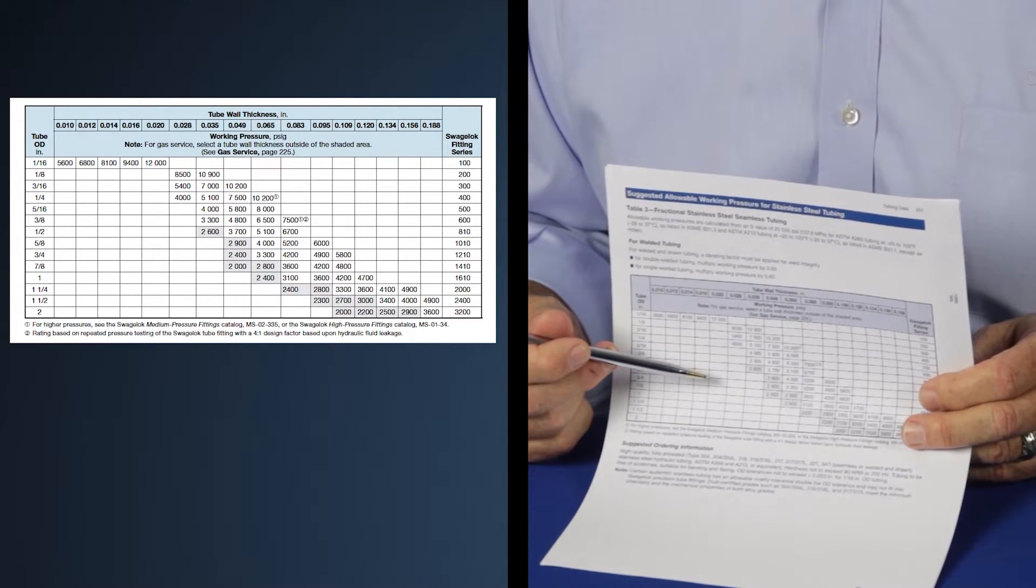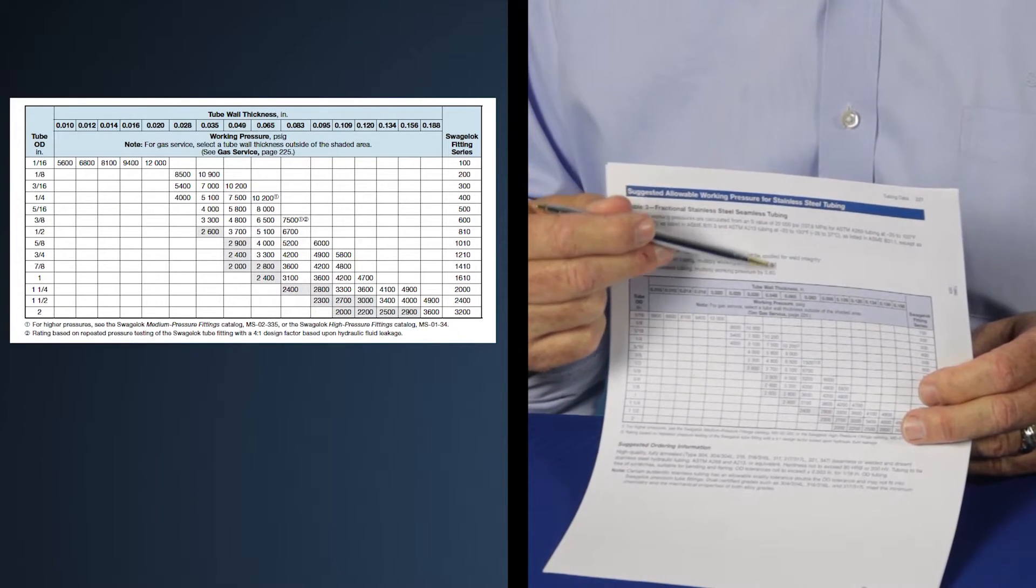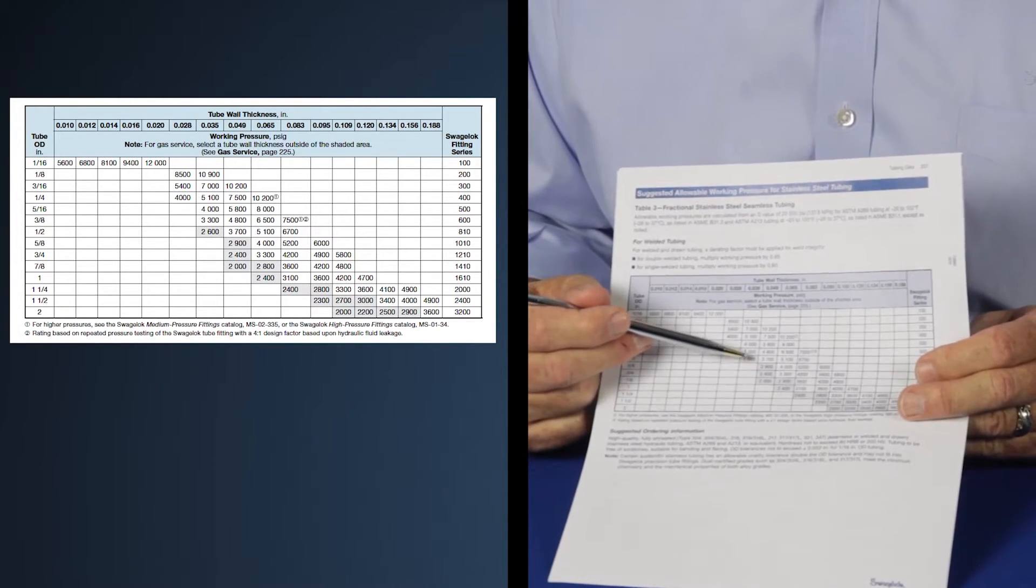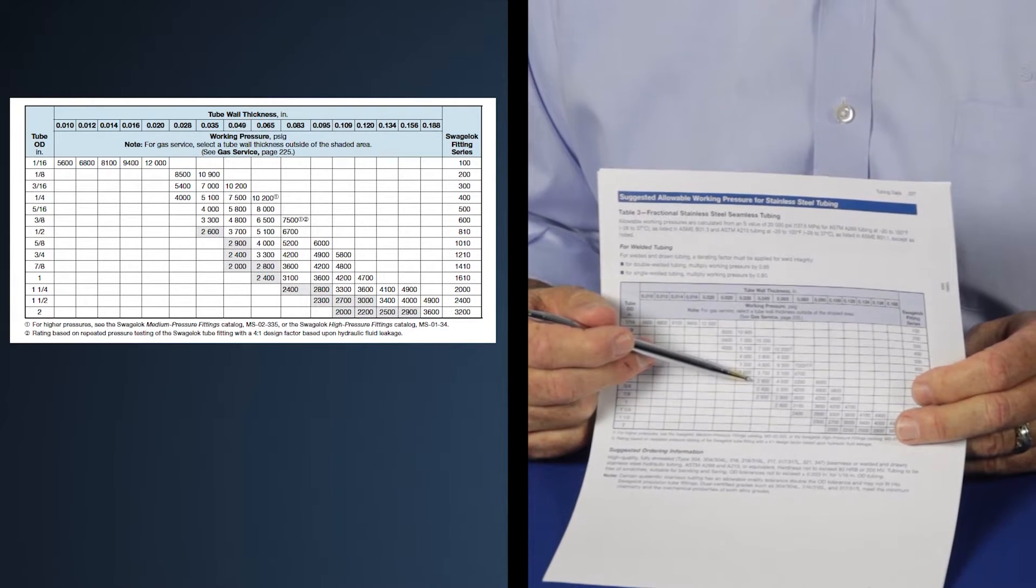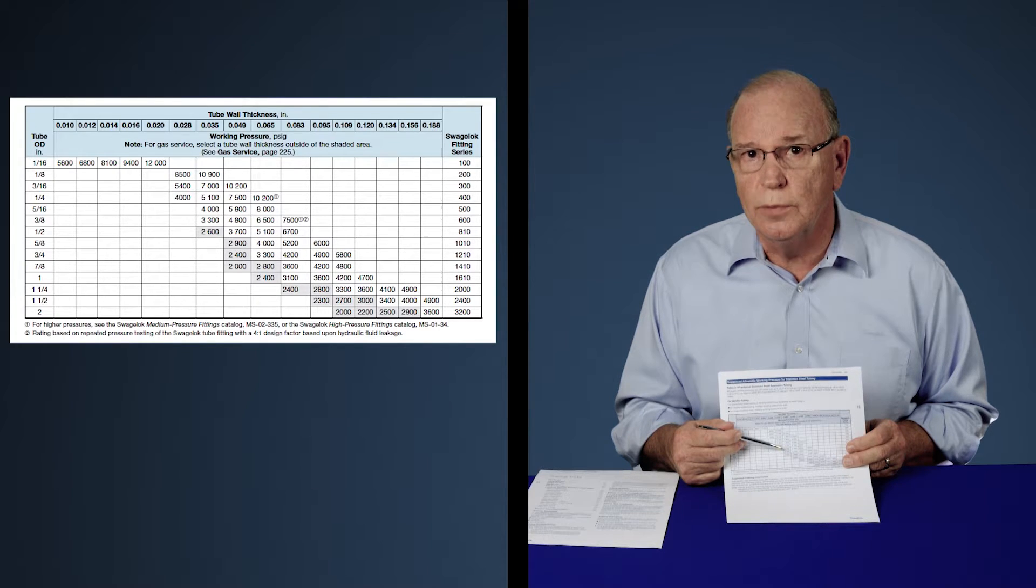If you're working in gas applications, you need to move over to the next wall thickness, which is 049 wall at 3,700 PSI. That's the minimum wall thickness we would suggest for half-inch tubing.